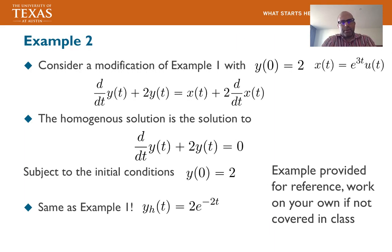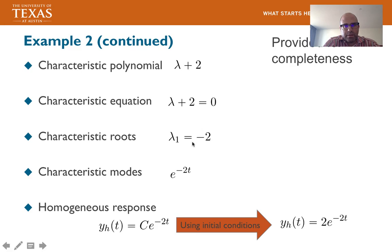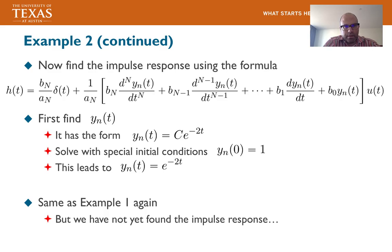Now a second example: a first-order differential equation that also has a derivative of the input, with the same initial condition and same input. The homogeneous solution is the same as Example 1 because the input is zero for the homogeneous solution. The characteristic polynomial gives λ = -2, characteristic mode e^{-2t}, and homogeneous response yh(t) = 2e^{-2t}.